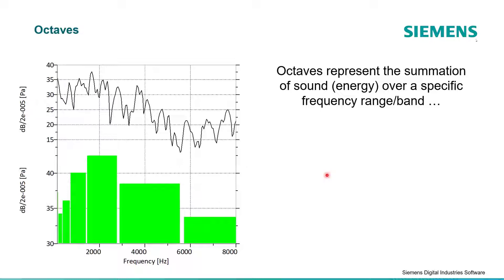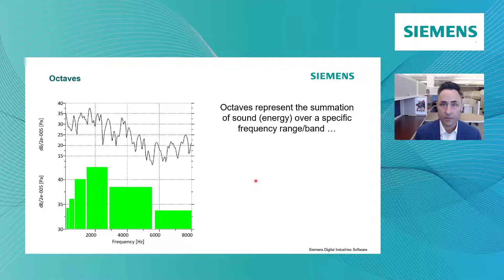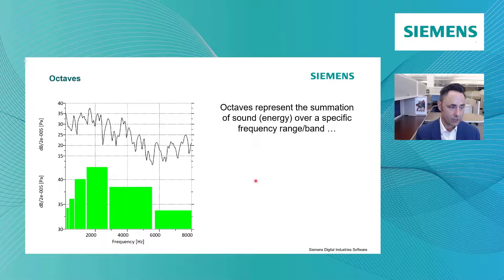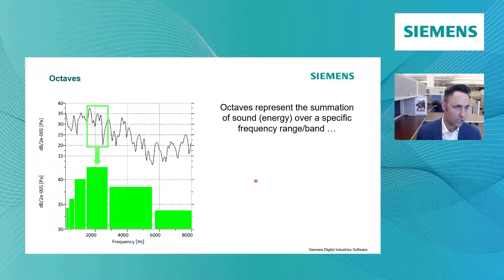Octaves are basically the summation of the sound over a certain frequency range, or the energy captured by the sound in a certain frequency range. And then we plot those on a special kind of axis. So essentially, I've got the noise curve up here. I'm saying group all of these amplitudes together, sum them up with an RMS sum, and report the value using this green bar.